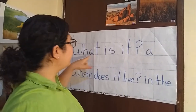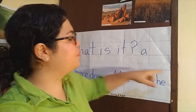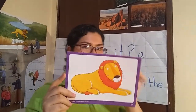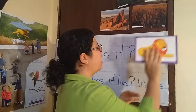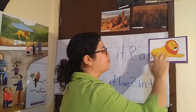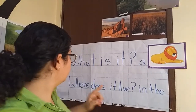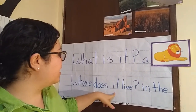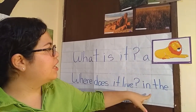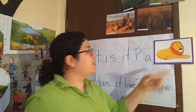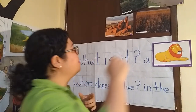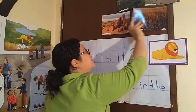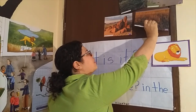We have here — what is it? It is a lion. Where does it live? It lives in the grass.